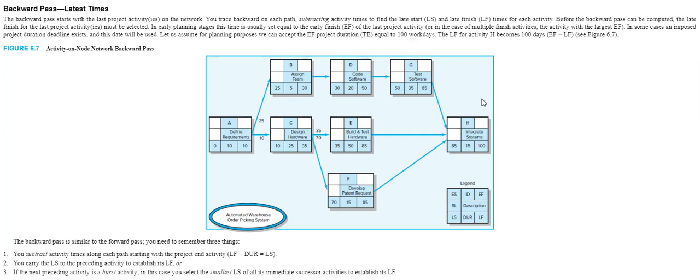You start at the very end of the project, in this case it's duration of 100, and then you subtract and go backwards. 100, and the duration of H is 15, so 100 minus 15 is 85. All right, just like the forward pass, when you have activities from one node going to multiple nodes, the duration carries over.